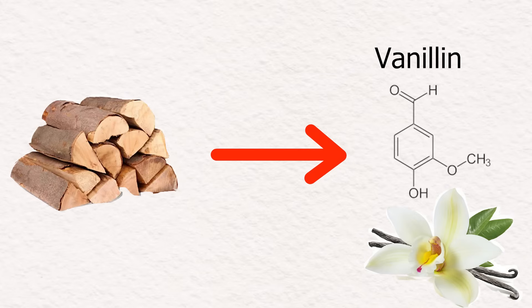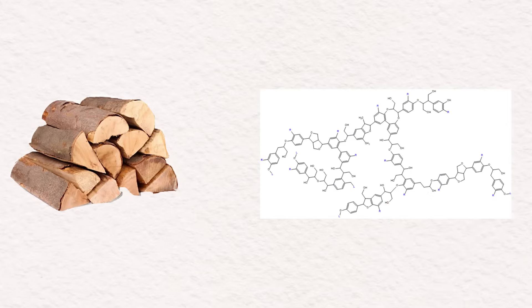What is interesting is that 15% of all the produced vanillin in the world comes from wood. Specifically it comes from lignin, which is a polymer that 15 to 35% of the wood consists of.